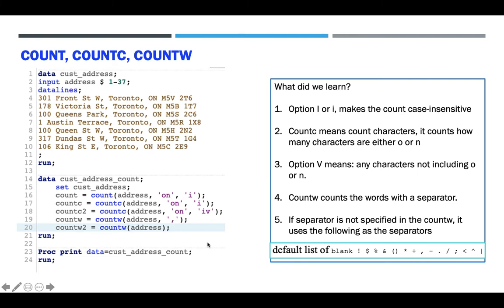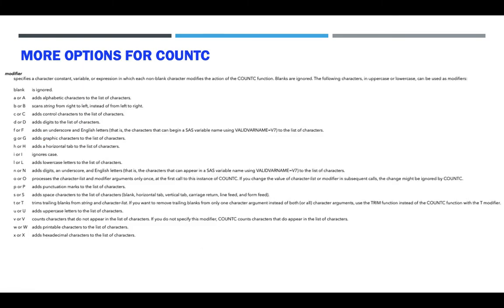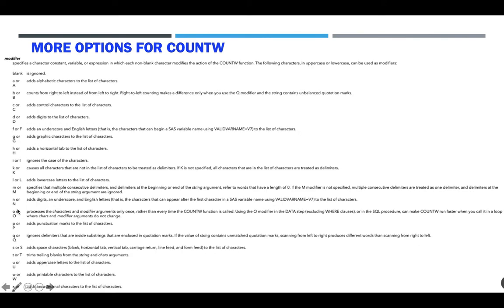There are quite many options available. For COUNTC, we used 'i' to ignore case and 'v' for characters not in the list, but there are many other options you are welcome to try. For COUNTW, there are options as well, but note there is no 'v' option because counting anything other than a specific word doesn't make sense — the 'v' modifier only applies to COUNTC. There are many more options beyond just 'i' and 'v'.